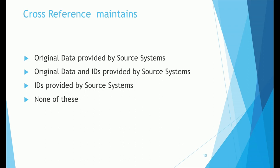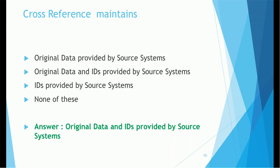Next question on cross-reference maintenance: what does the cross-reference table maintain and contain? Option 1: original data provided by source system. Option 2: original data and IDs provided by source system. Option 3: IDs provided by source system. Option 4: none of the above. The correct answer is option 2 — it maintains original data and IDs provided by source systems.